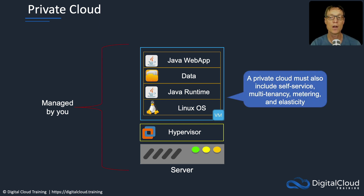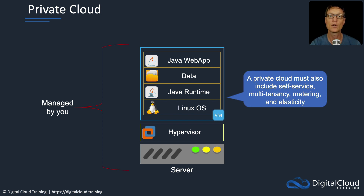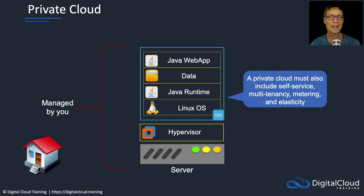A private cloud must include attributes such as self-service, multi-tenancy, metering, and elasticity — and this is also going to be provided by software that you must manage. So there's lots of responsibility in the private cloud operating model. As an analogy, this is kind of like owning a house — you own it completely, and you must manage the overall maintenance of that house.